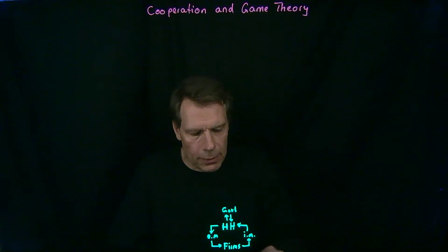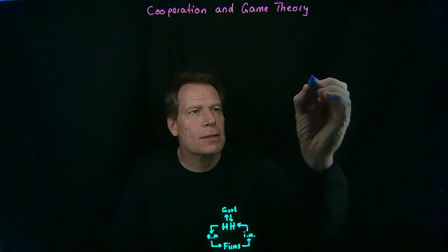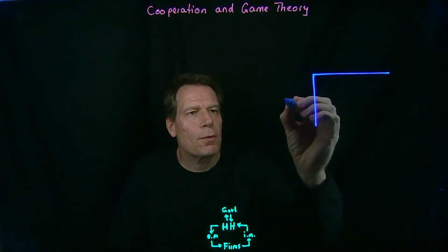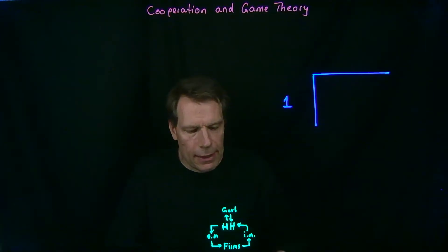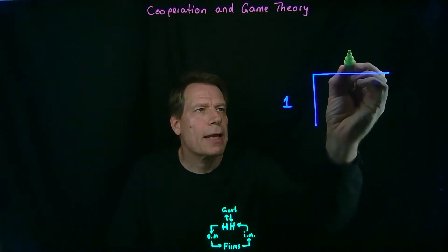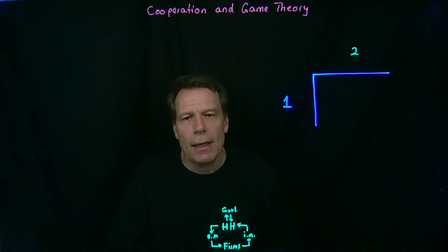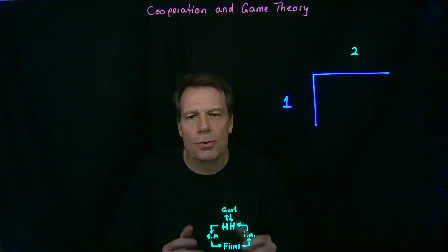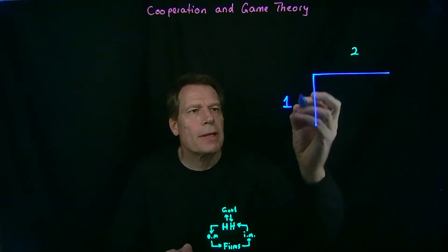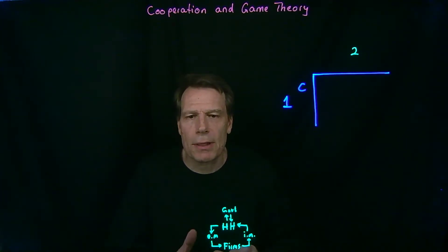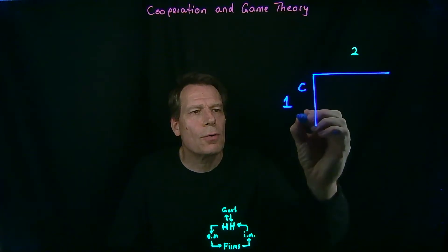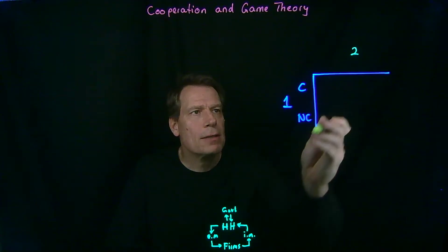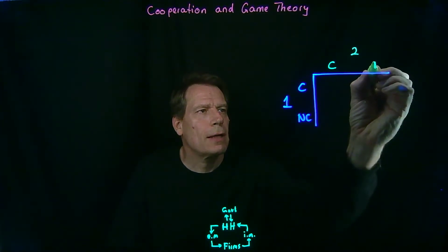We could model that in a simple game matrix. In the game matrix, we put one player on the vertical axis — let's call that Player 1 — and the other player on the horizontal axis — let's call that Player 2. Then we put on the axes what actions the two players have available to them. Player 1 can choose to cooperate (specialize and trade) or not cooperate (not specialize and trade less). Player 2 has the same possible options: cooperate or not cooperate.